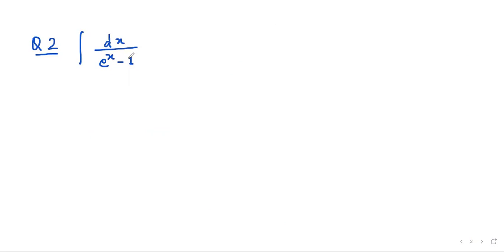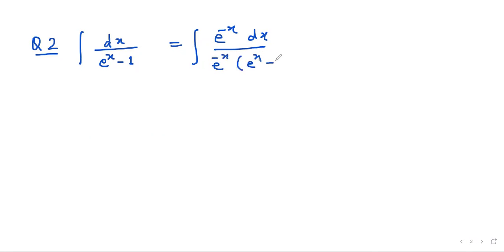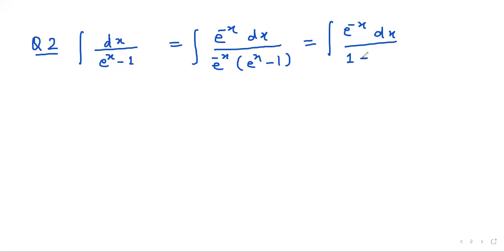Let us look at the second question: integration of dx divided by e power x minus 1. We can multiply by e power minus x in the numerator and denominator. It will become e power minus x dx divided by e power x minus 1 times e power minus x. Since e power x times e power minus x equals 1, the denominator becomes 1 minus e power minus x. Now let 1 minus e power minus x equal to t.